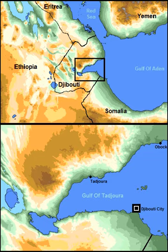The Gulf of Tajura is a gulf or basin of the Indian Ocean in the Horn of Africa. It lies south of the Straits of Bab el-Mandeb, or the entrance to the Red Sea, at 11.7 degrees north, 43.0 degrees east.